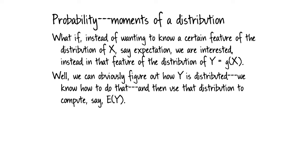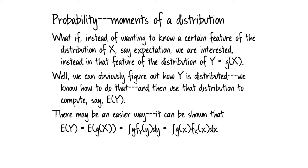But there might be an easier way. In a lot of cases this can be mathematically messy or difficult. Maybe we don't care about the whole distribution — maybe we only care about the expectation. We don't really need the PDF of Y; all we care about is the expectation of Y. So it might be easier to use this formula: we just integrate over the support of X, G of X, times the PDF of X.